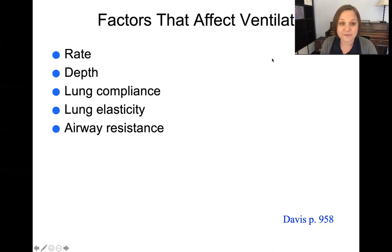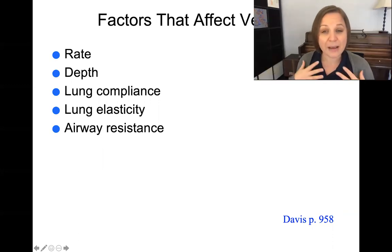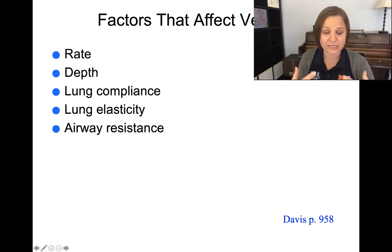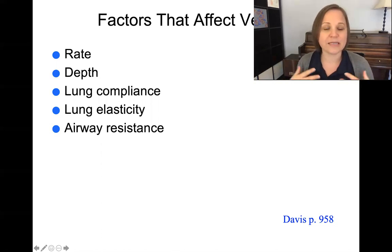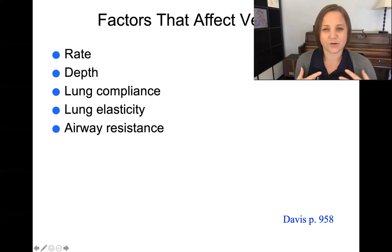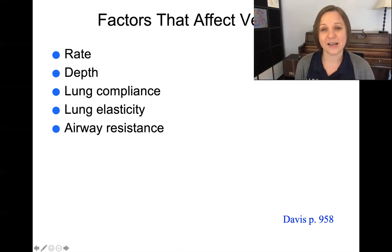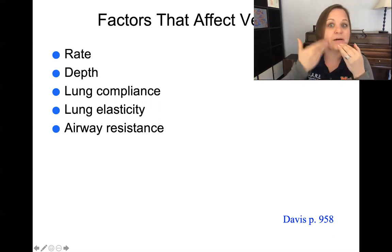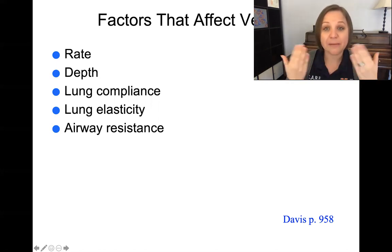Different things affect ventilation: the rate — how many times per minute are we breathing; the depth — how deep the breaths are; the lung compliance and elasticity — how easy it is for the lungs to open and move freely, whether they're tight or able to move freely; and airway resistance — any constriction making the airway smaller that causes less air to move in and out of the lungs.